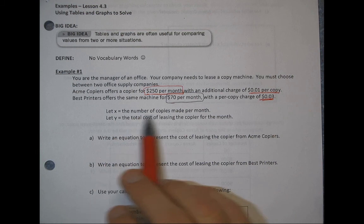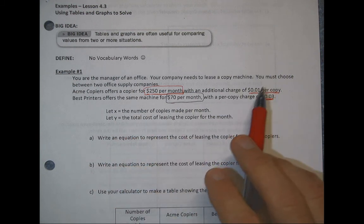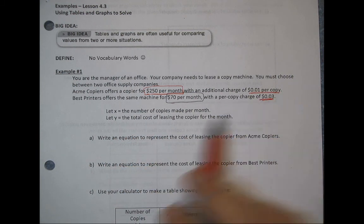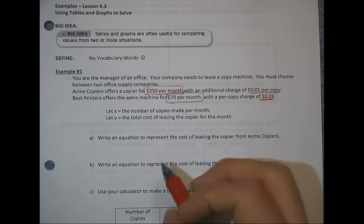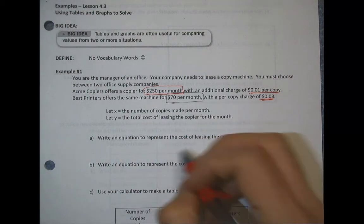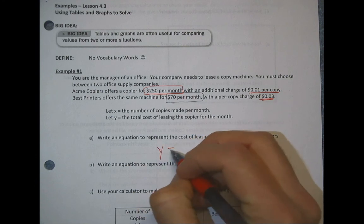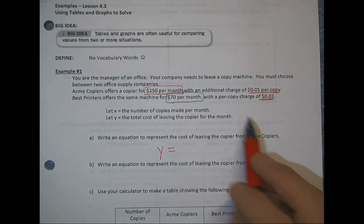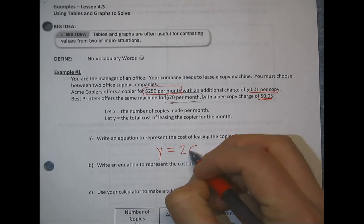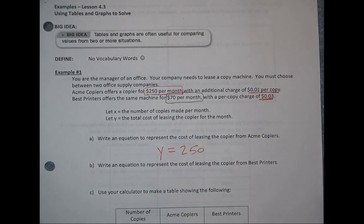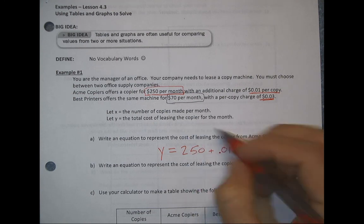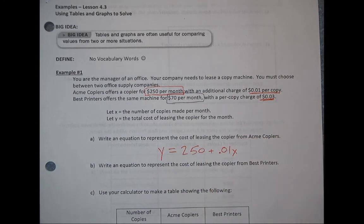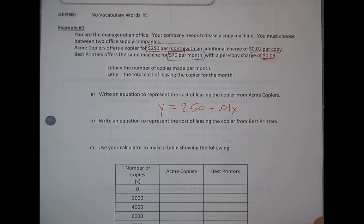We're going to let X represent the number of copies — $0.01 per copy for Acme, $0.03 per copy for Best Printers — and Y is going to be the total cost of leasing the copier. We'll write an equation to represent Acme's cost: Y equals $2.50 — that's your constant — plus $0.01 times X, the number of copies.